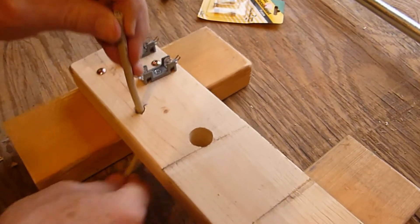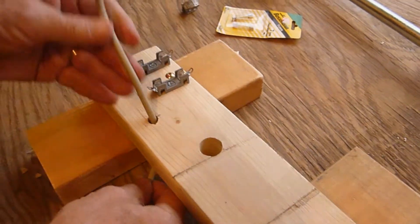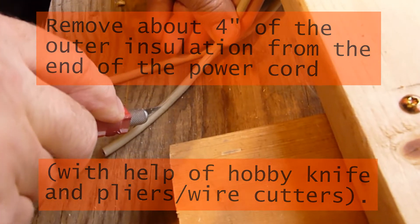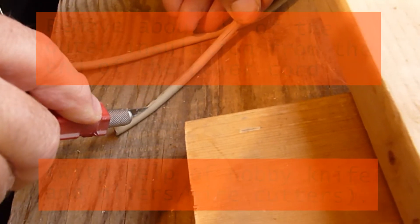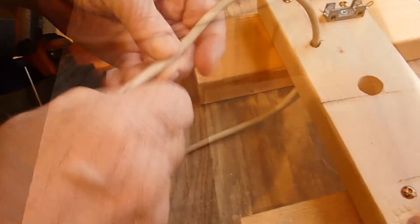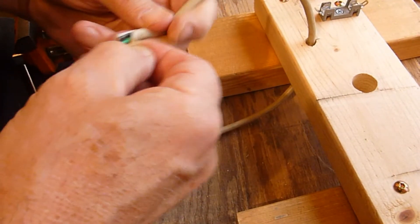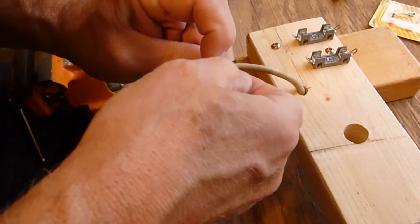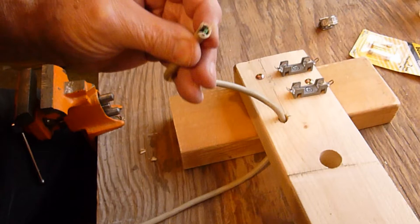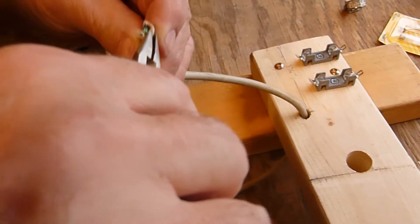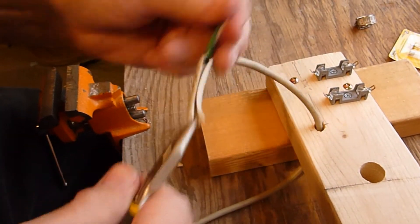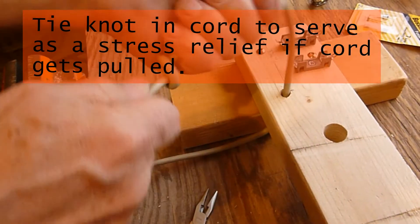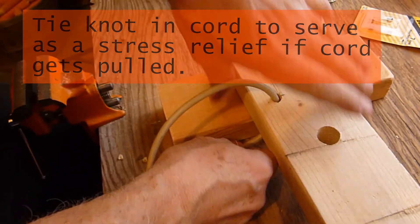As shown in this video pull the end of the power cord up through the 3/8 inch hole from the bottom. Then with the help of a hobby knife and or wire cutters and pliers remove about 4 inches of the outer insulation from the cable. Tie a knot in the power cord as I've shown here. This is for stress relief.